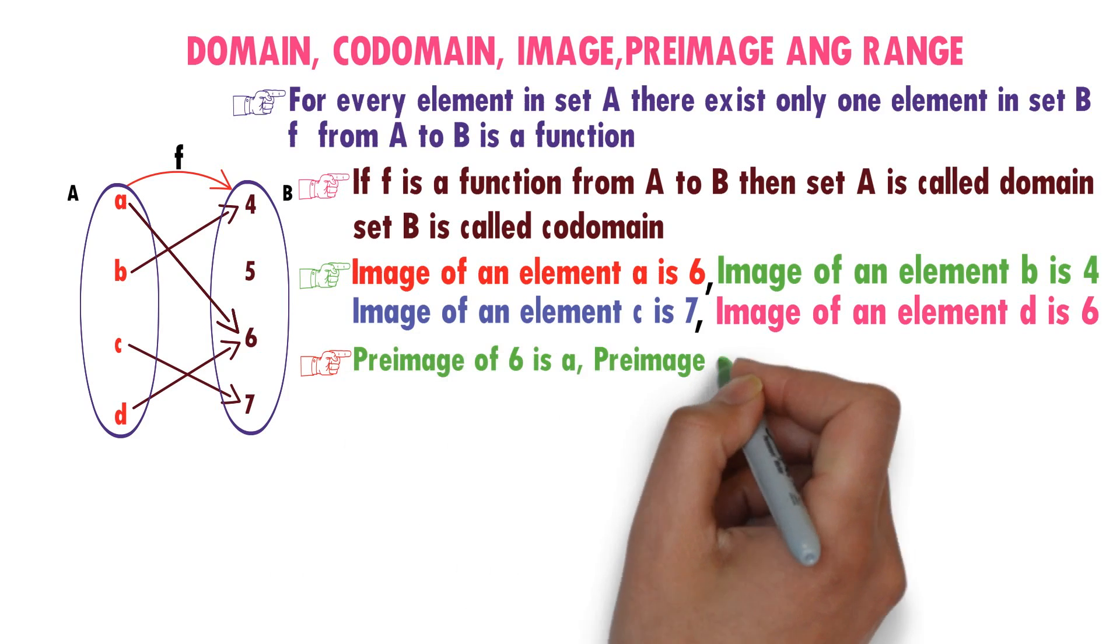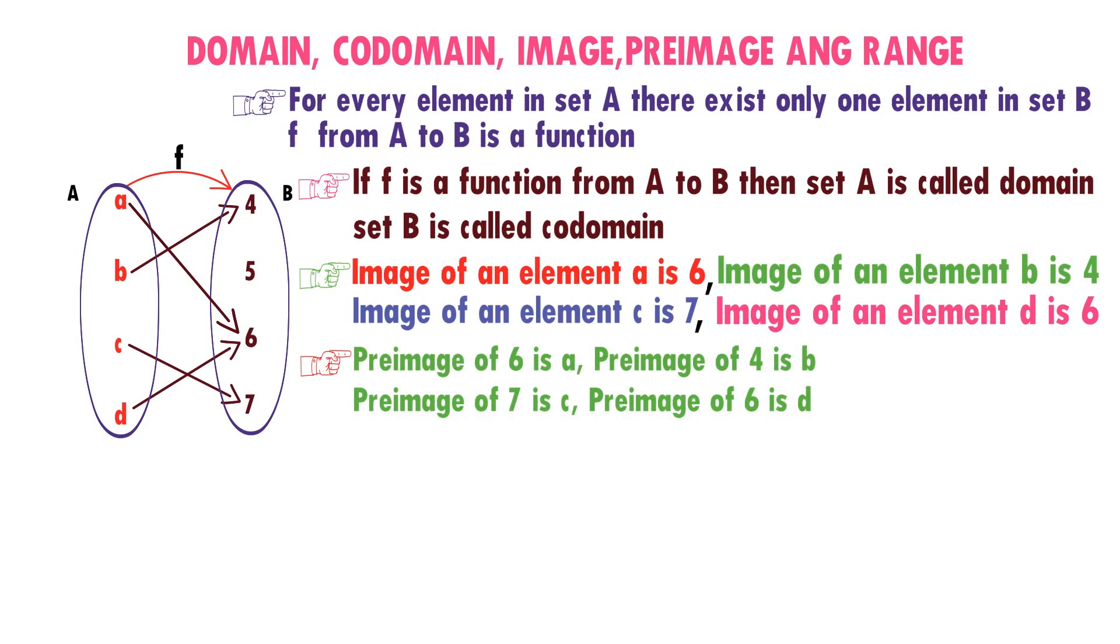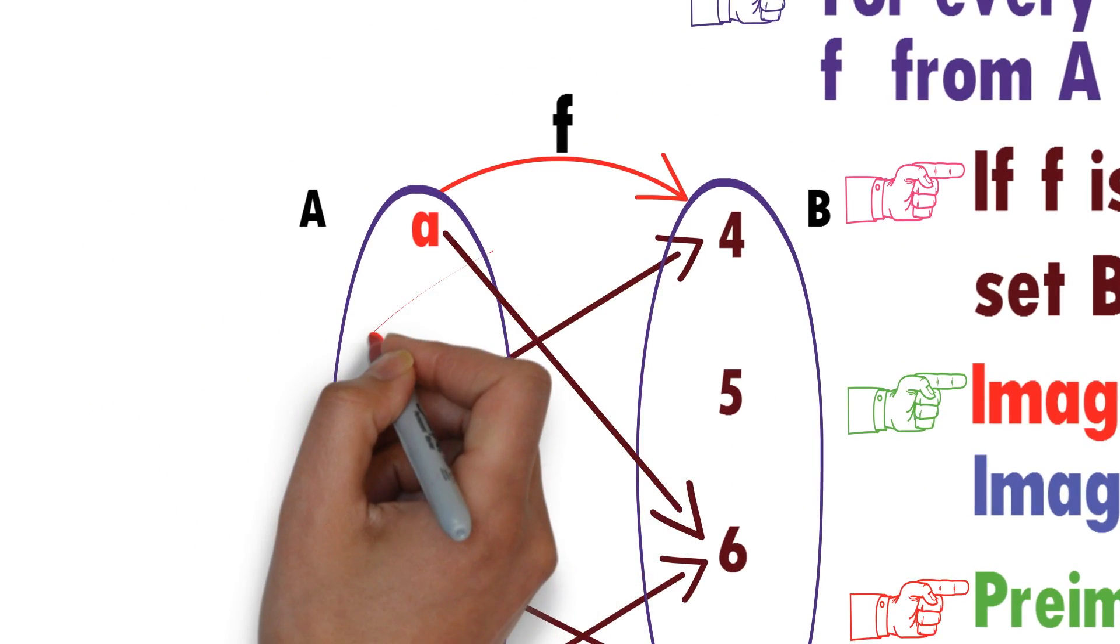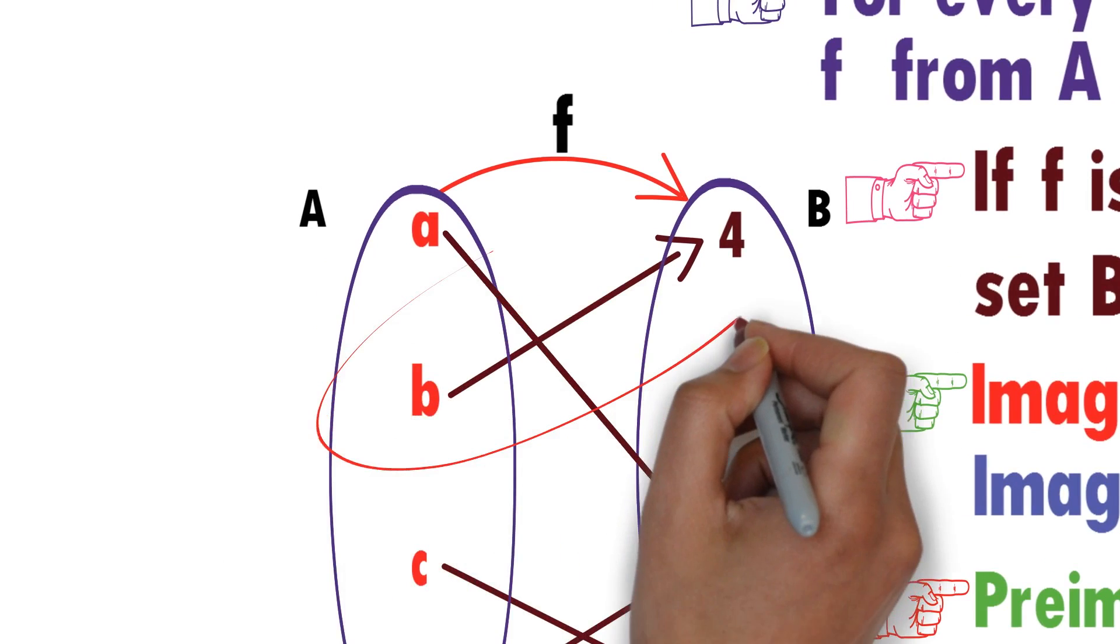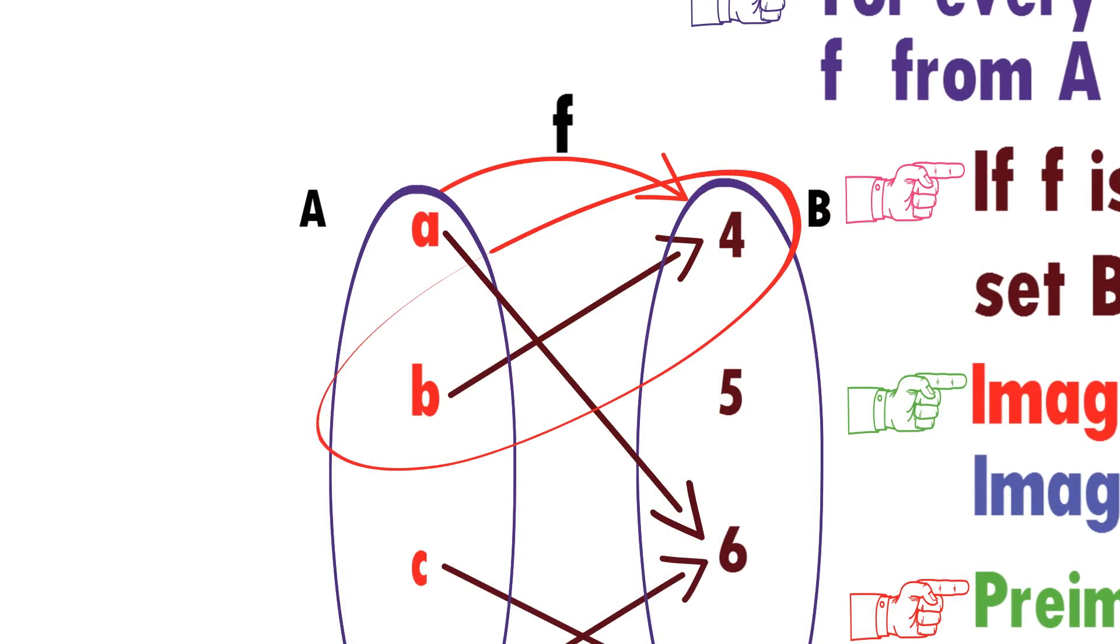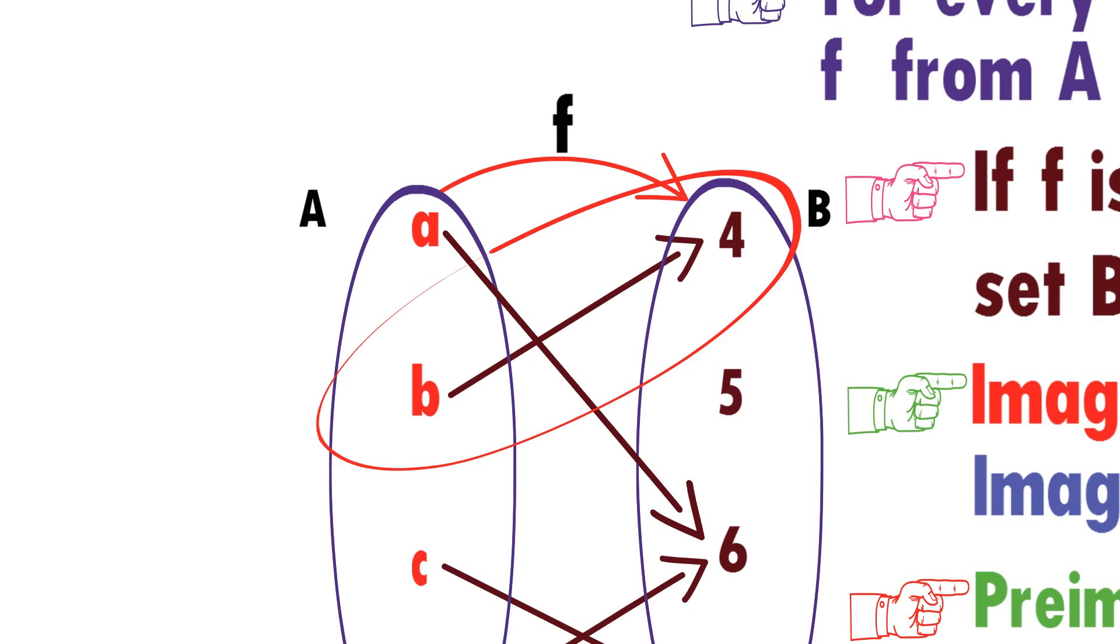Pre-image of 6 is a. Pre-image of 4 is b. Observe here. B is related to 4. So, pre-image of 4 is b. And image of b is 4.